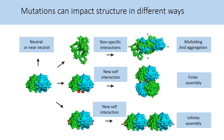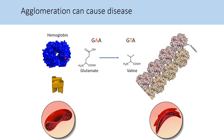Importantly, this assembly mechanism differs fundamentally from aggregation because misfolding does not drive it. To highlight this difference, we term it agglomeration. Agglomeration can induce disease, like in the case of sickle cell anemia. In this disease, a single mutation of glutamate to valine causes hemoglobin to agglomerate.